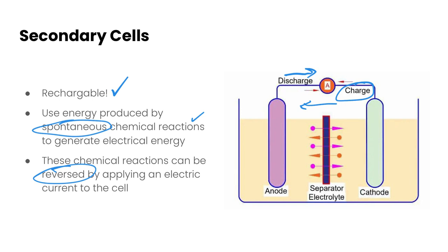So typically in these cells we have anode cathode we usually have some sort of separator electrolyte that allows the ions to pass through freely between both sides. So let's take a look at a couple of specific examples of secondary cells to see how they work.